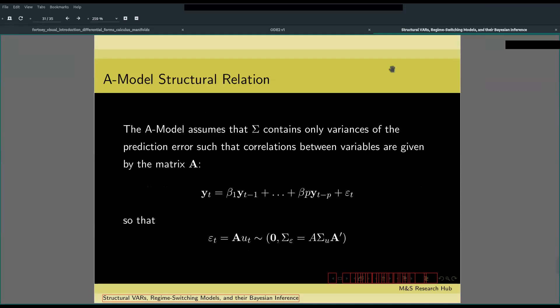The A model structural relation assumes that the error term's variance covariance matrix only contains variances of the prediction error, so that the prediction error has the following form. The matrix A is distributed with zero expected value and the following variance.